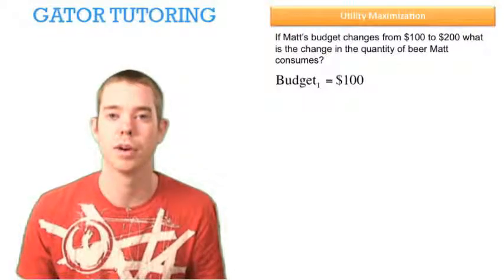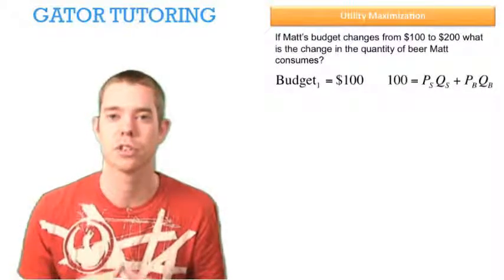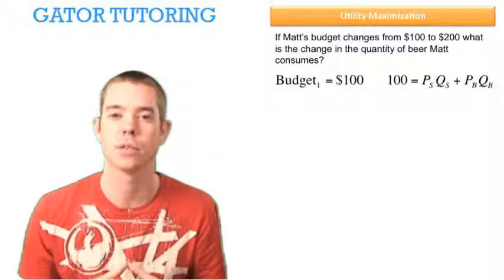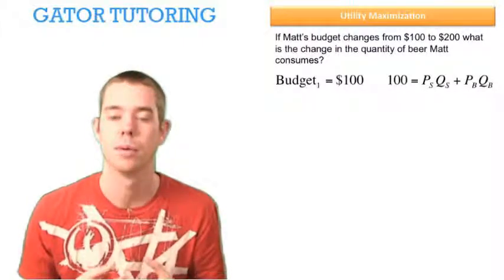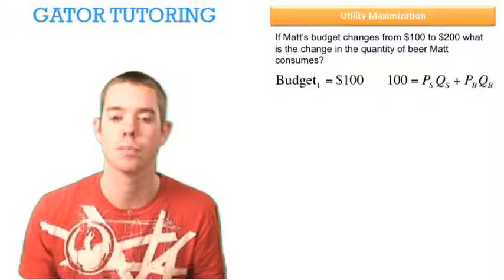So we know our first budget is $100, which gives us the budget constraint: 100 equals the price of sandwiches times the quantity of sandwiches plus the price of beer times the quantity of beer.